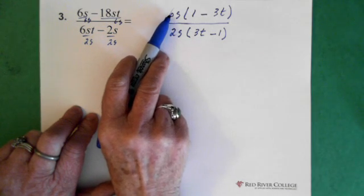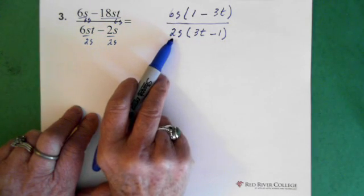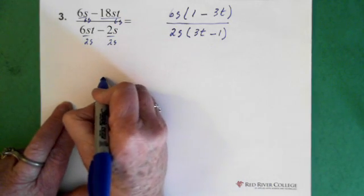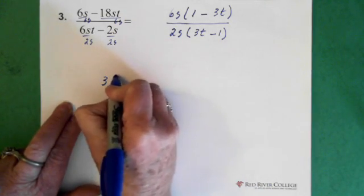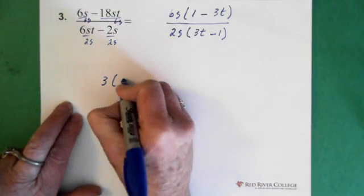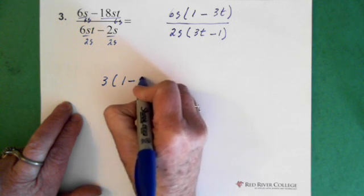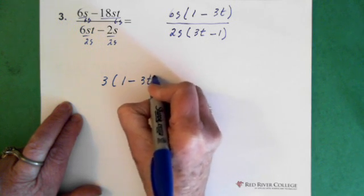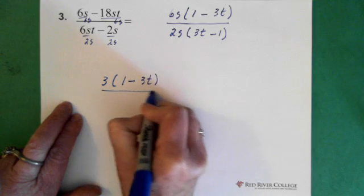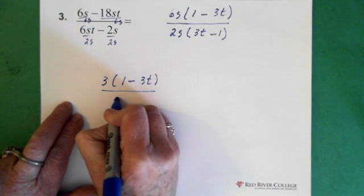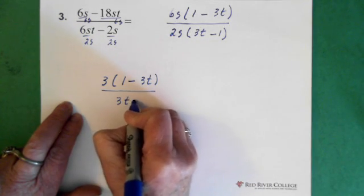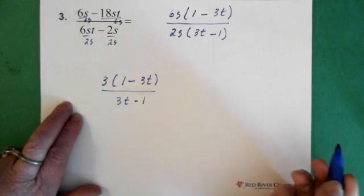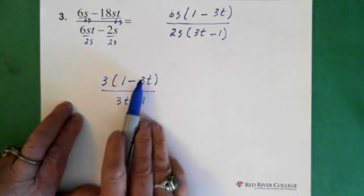Now, here we can see the 6s divided by the 2s gives us a 3 in the numerator. So in the top, we're left with a 3. And in the top, we have 1 minus 3t. And in the denominator, we have 3t minus 1.